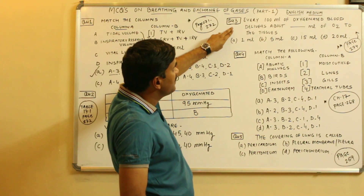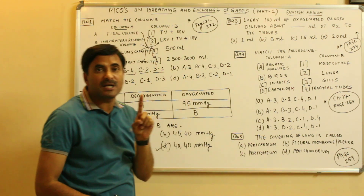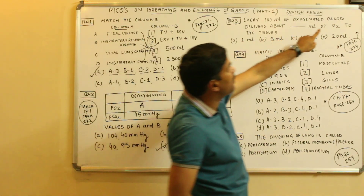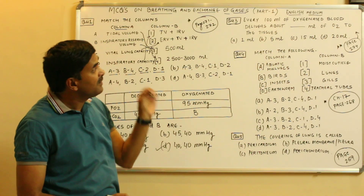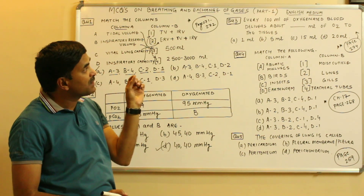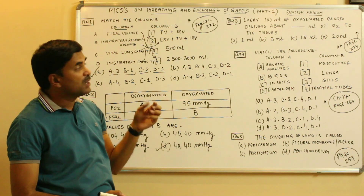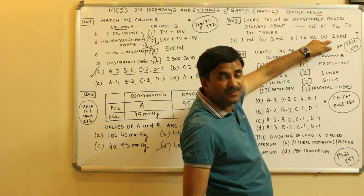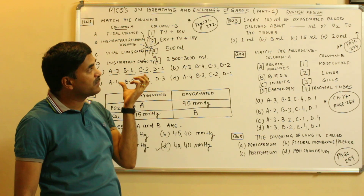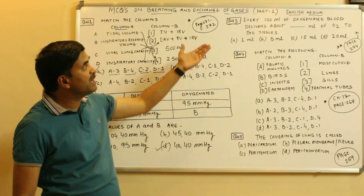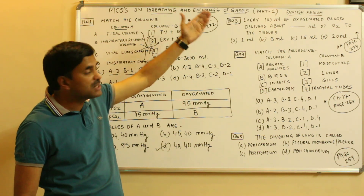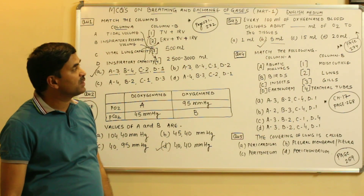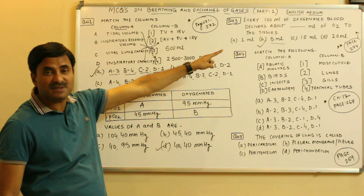Now question number three: every 100 ml of oxygenated blood delivers about how many ml of oxygen to the tissues? This question is from page number 274 of NCERT. If you see the last paragraph on page 274, you will find that every 100 ml of oxygenated blood delivers about 5 ml of oxygen to the tissues. So the answer is B.